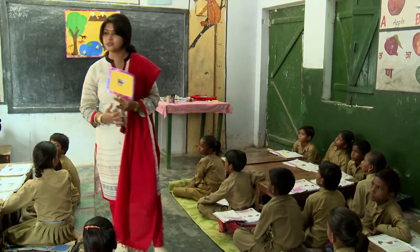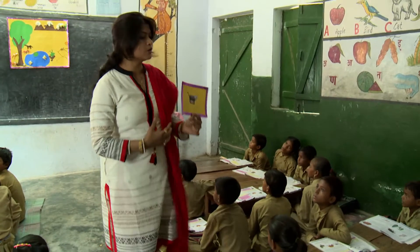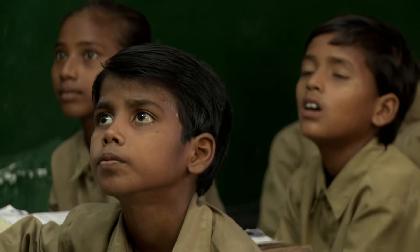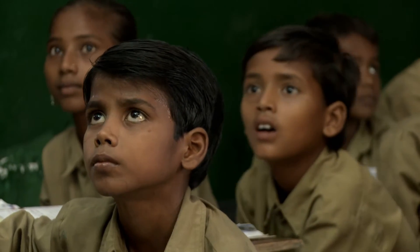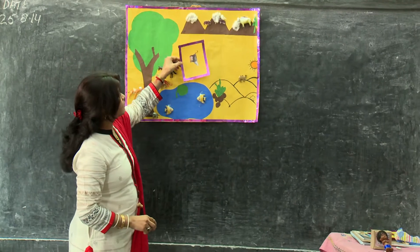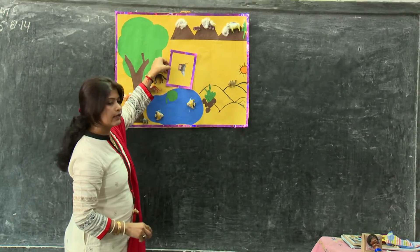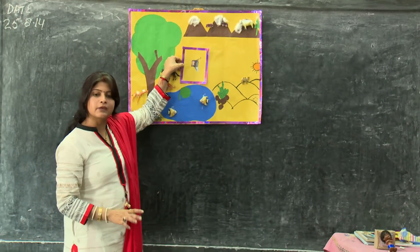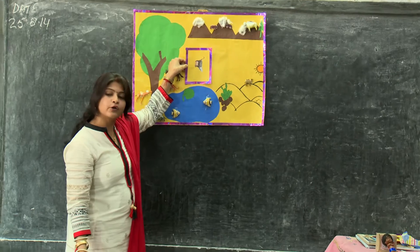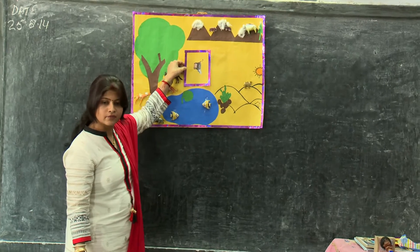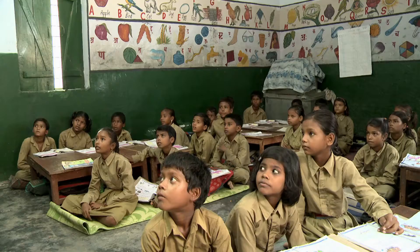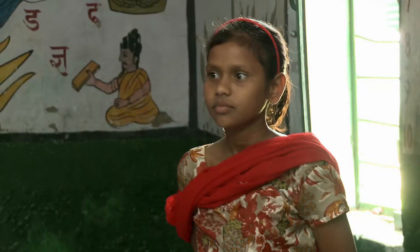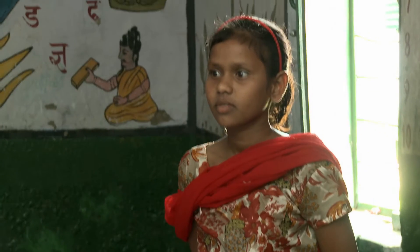The teacher walks around the class to show small pictures of the animal to all the students. She then asks them to think about why the unusual animal died when it came out of the water onto the land.